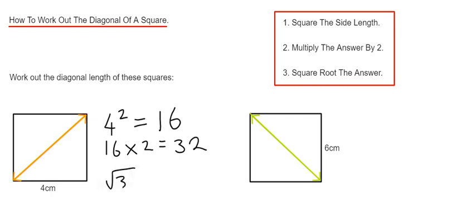If you use your calculator for that, the square root of 32 would be 5.7 centimeters, rounded to one decimal place. Let's have a look at the second example.